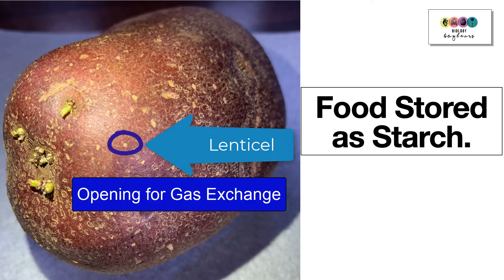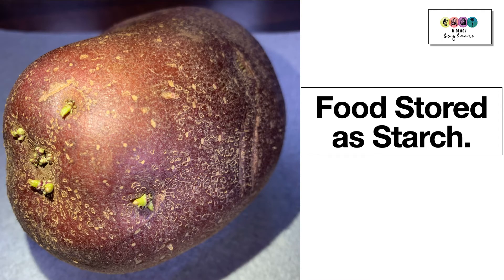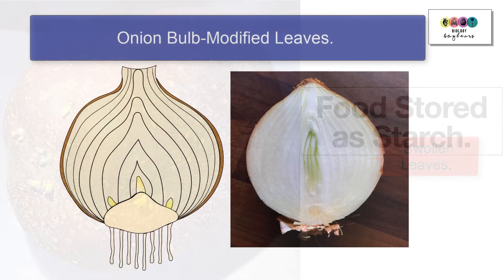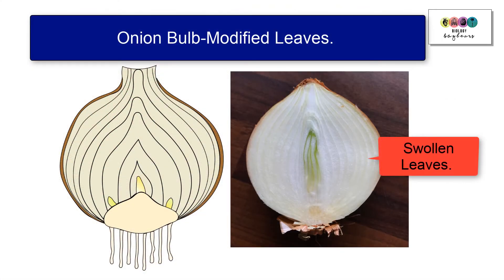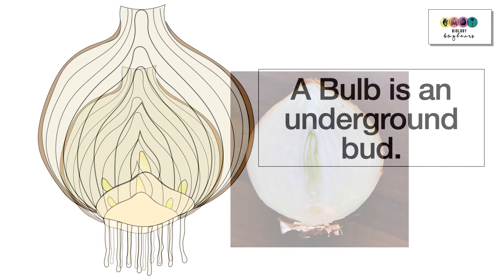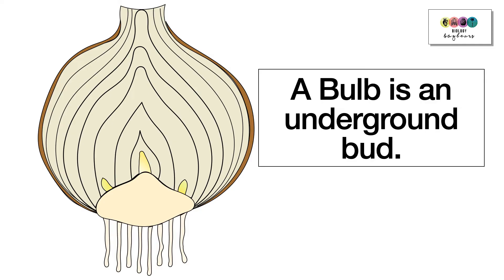Next we're looking at the onion bulb, and this is an example where leaves are modified to act as food storage organs. We're using the onion bulb as our example of leaves modified for food storage. A bulb is an underground bud, and when you look at the onion diagram there are certain important labels that you should be able to fill in.